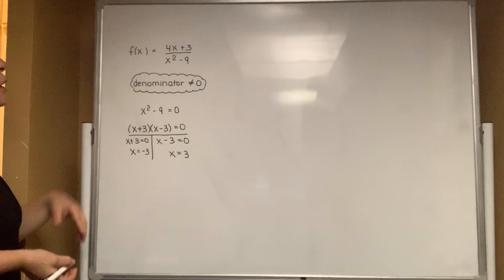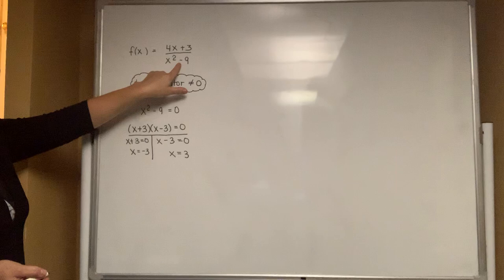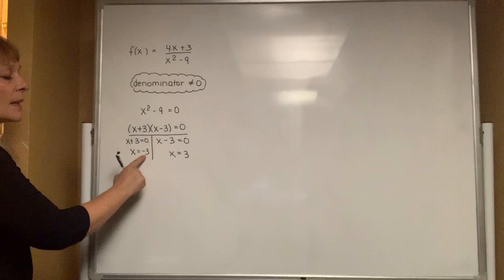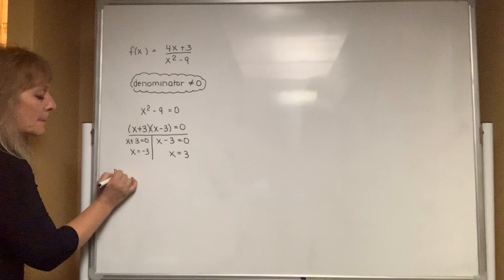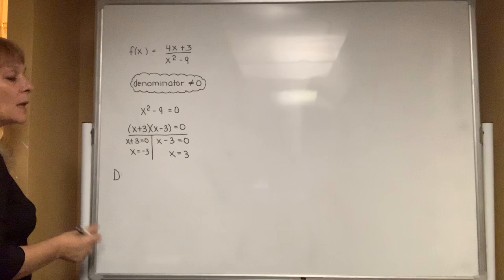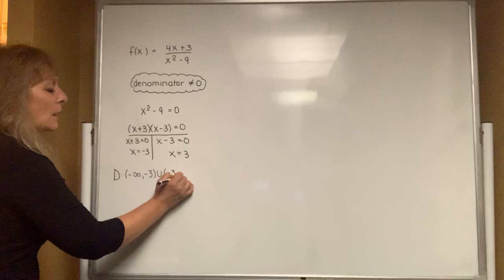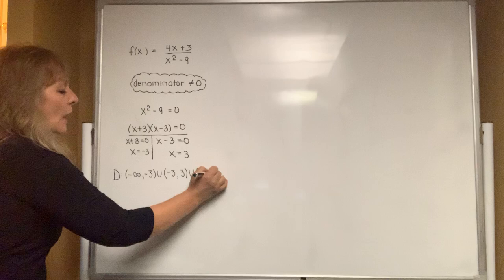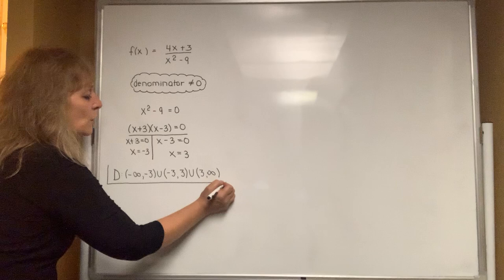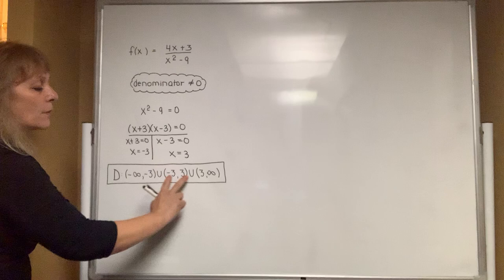When x equals negative 3, your numerator comes out to be negative 9 but your denominator comes out to be zero. You're not allowed to divide by zero, so you're not allowed to include negative 3 either. The domain is all real numbers except negative 3 and positive 3. In interval notation: negative infinity to negative 3, then jump over negative 3 across to 3, then jump over 3 to infinity. This means all real numbers work except for negative 3 and positive 3.